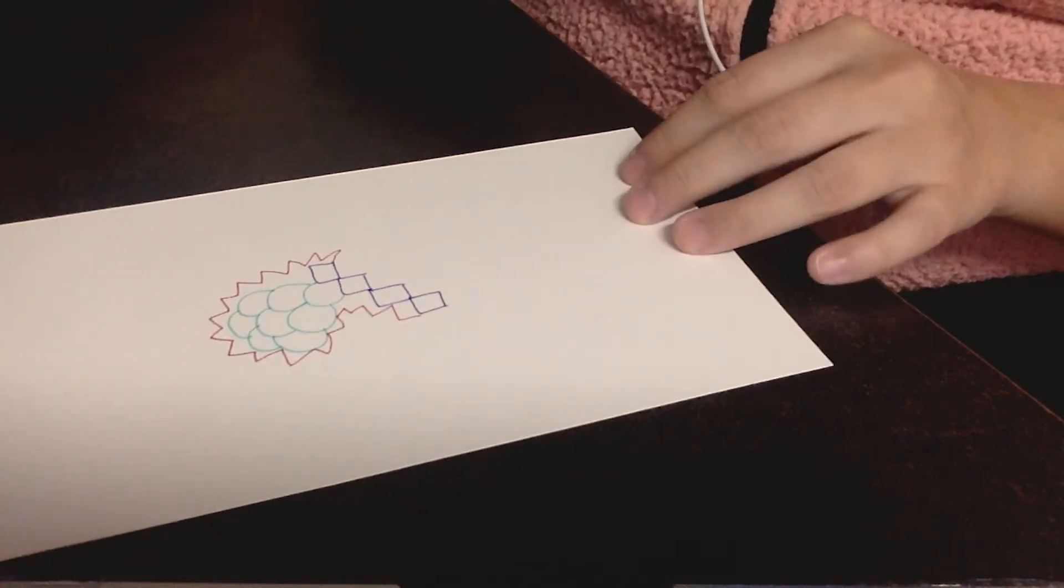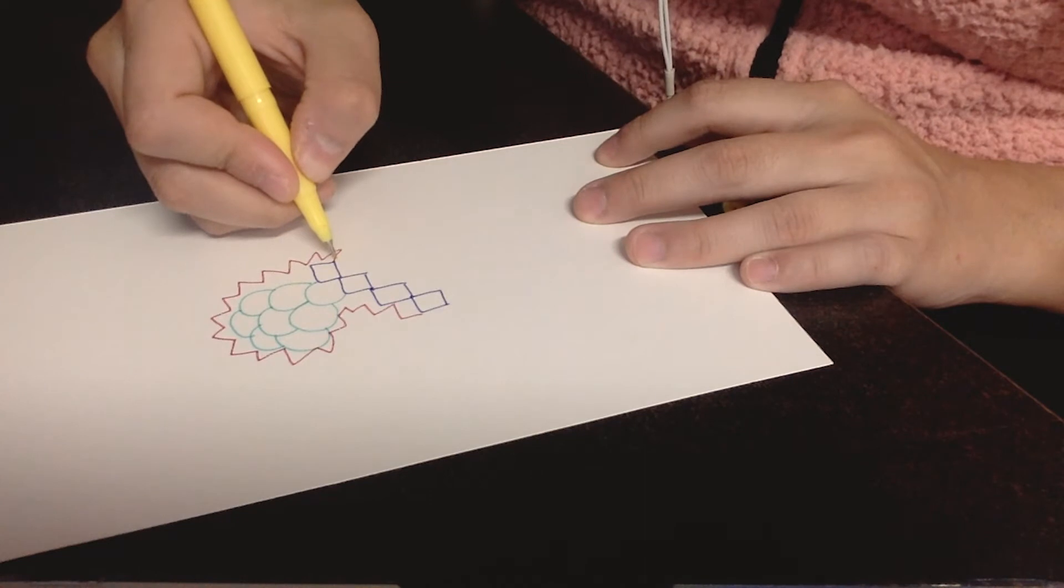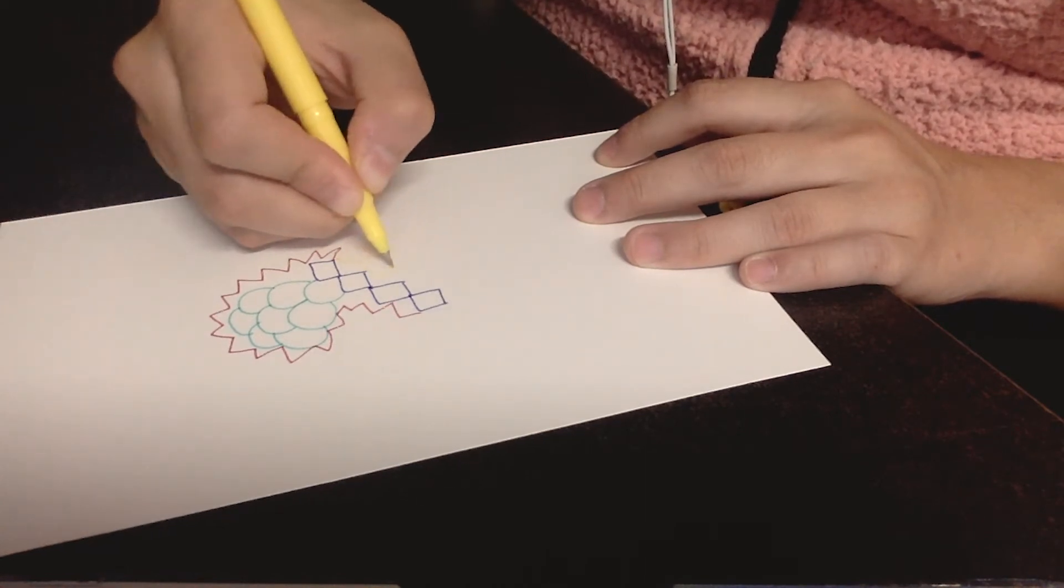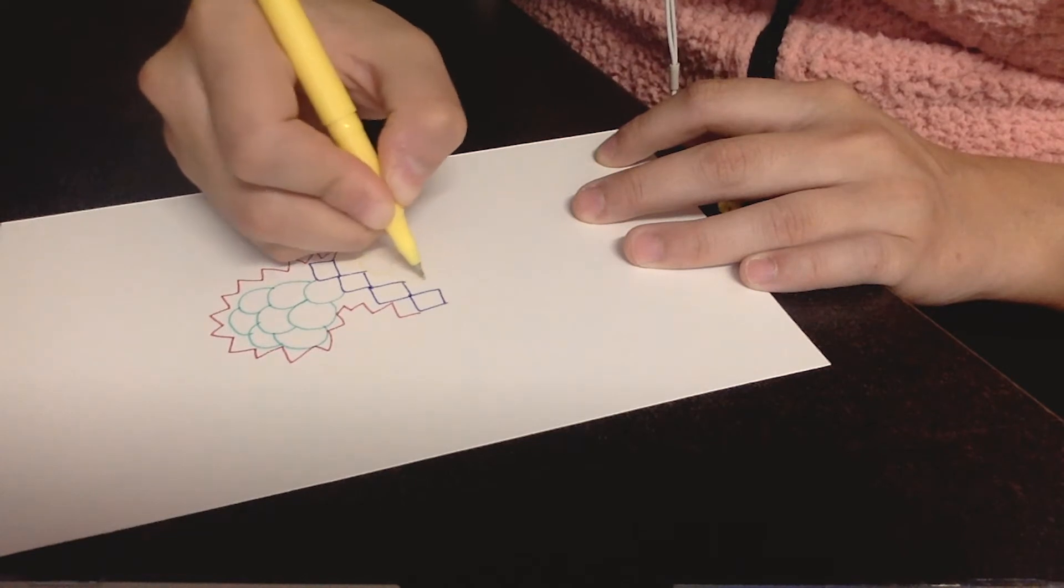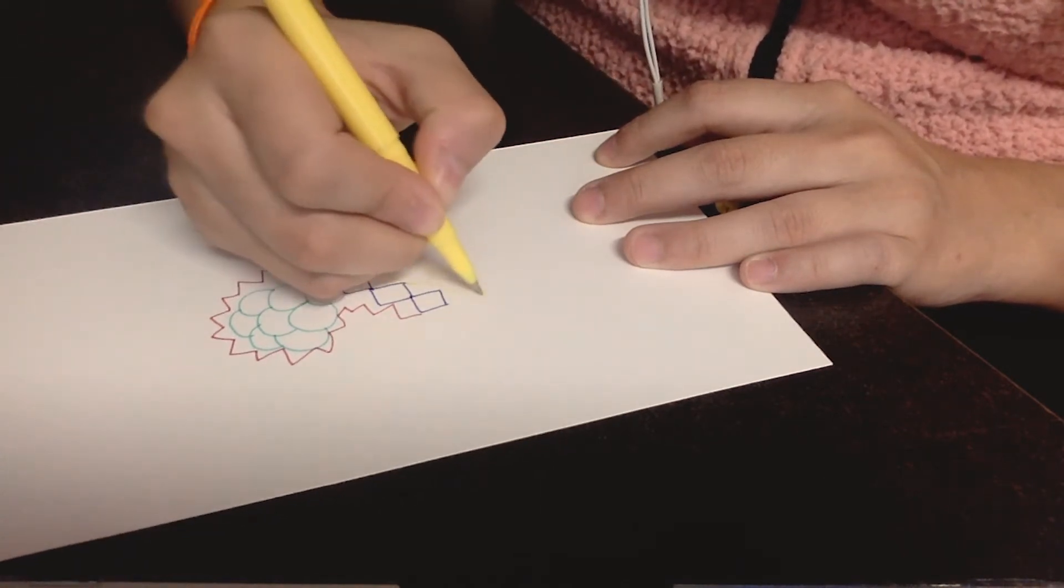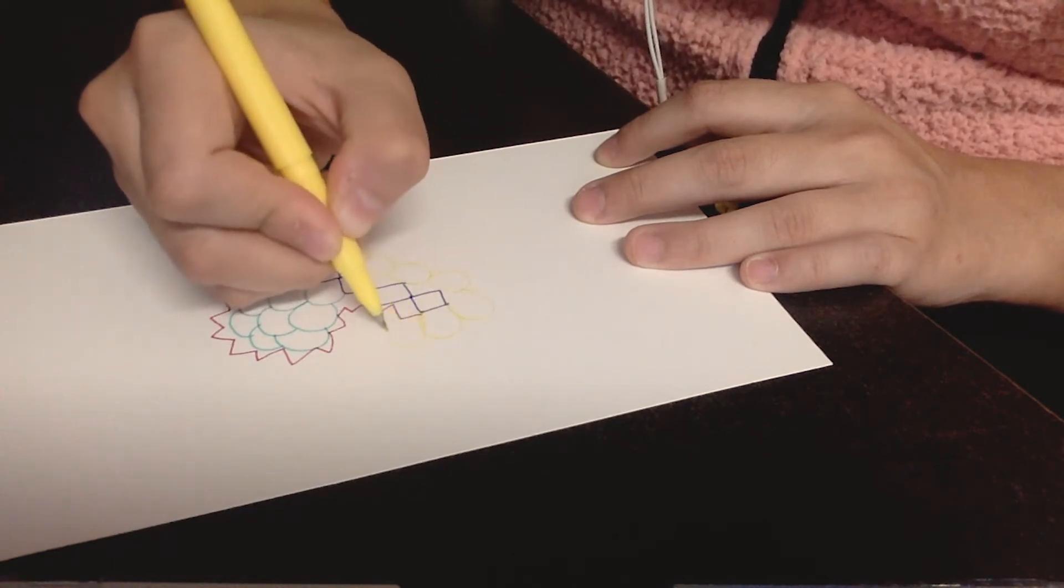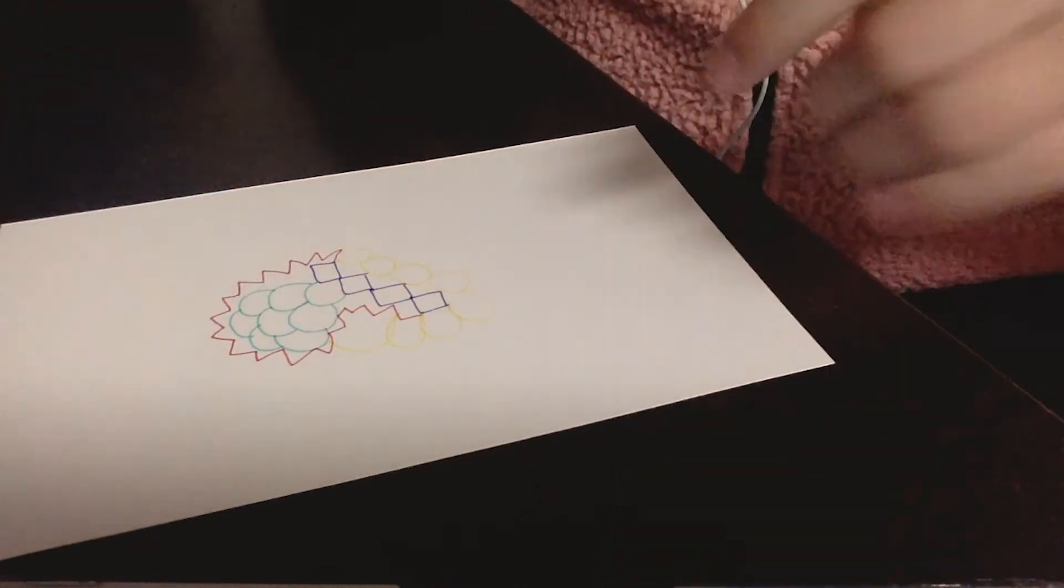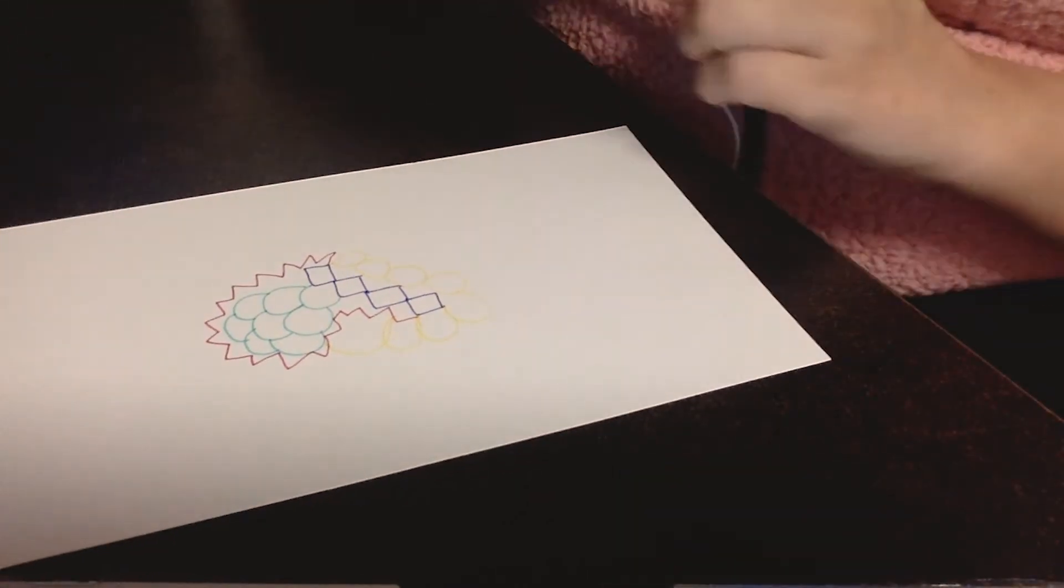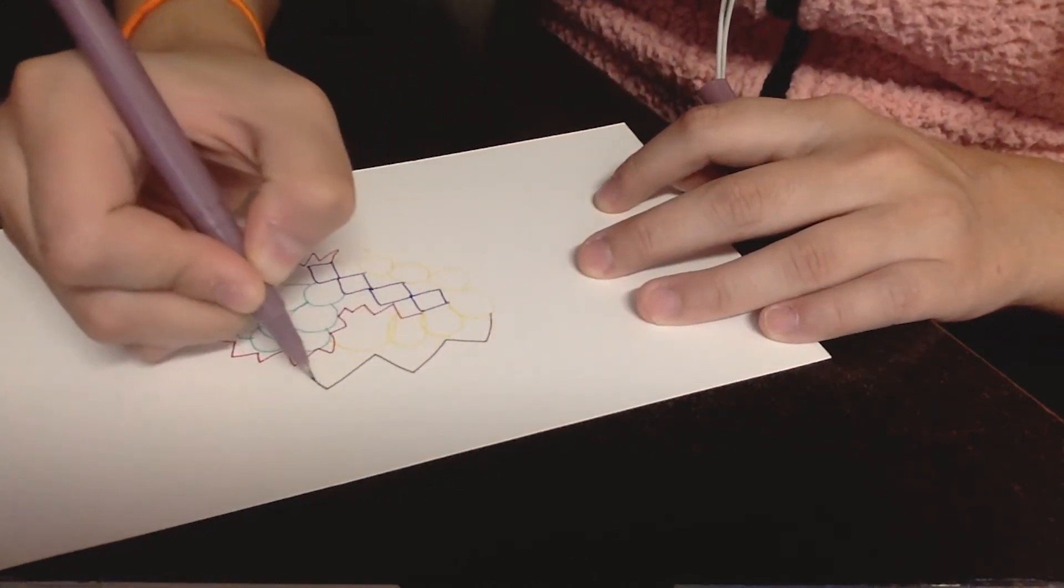So I'm going to grab a different color and I'm going to do some more circles. That color is a little bit harder to see, but that's okay. This is just for you and if you like the color, stick with the color. And I'm going to grab a different color and I'm going to do a couple more zigzags.